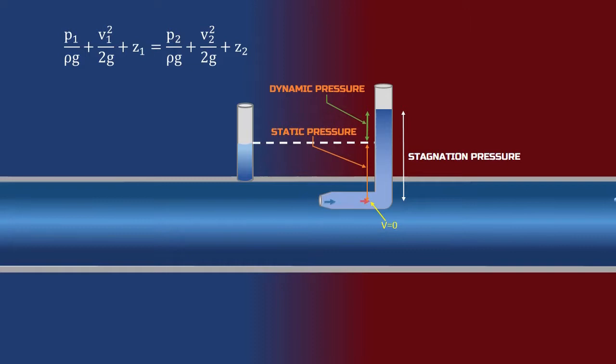Now let's use the Bernoulli equation and derive the formula for velocity of the fluid. Let's take two points: point one and two. At point one, the velocity of the flowing fluid is v, and at point two, velocity inside the pitot tube is zero as the flow has become stagnant here. Now since both the points are at the same elevation, z1 and z2 get cancelled, and v2 is equal to zero, so this term is also zero.